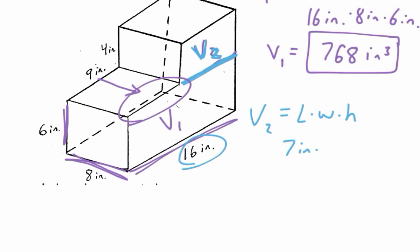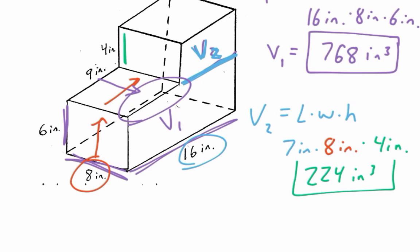My width, well, if this thing is all drawn with 90 degree angles, my width is going to be 8 inches there. So it's going to be 8 inches on that edge, should be 8 inches on that edge as well. So 8 inches. Times my height, which my height of that top part is just 4 inches. So 7 times 8, 56. 56 times 4 gives me 224 cubic inches. And that's going to be my second volume, that top chunk.